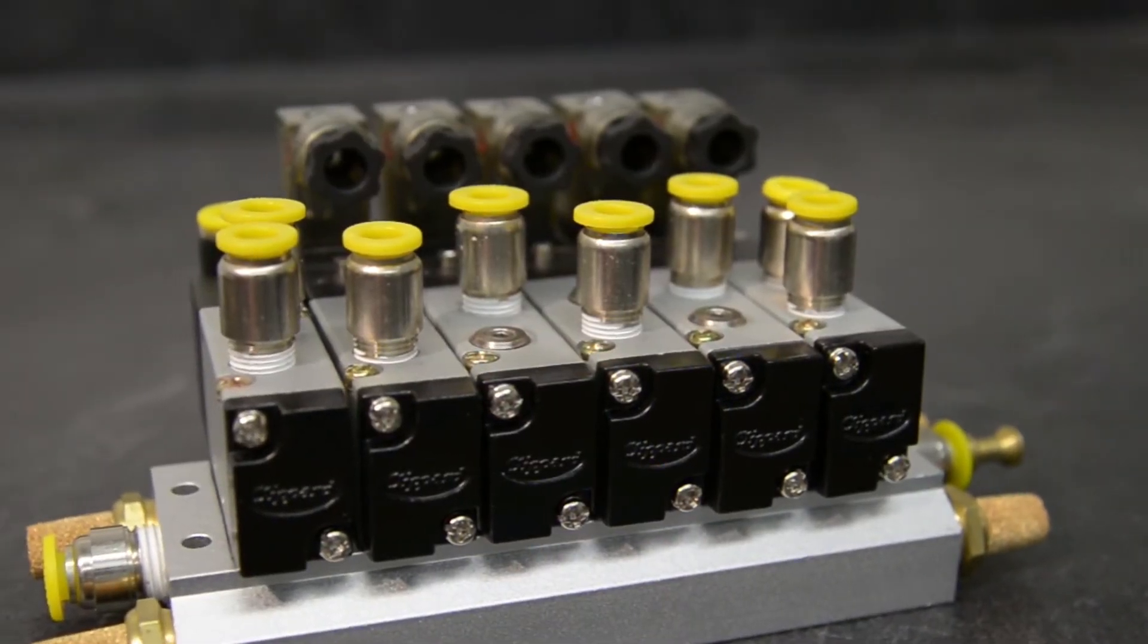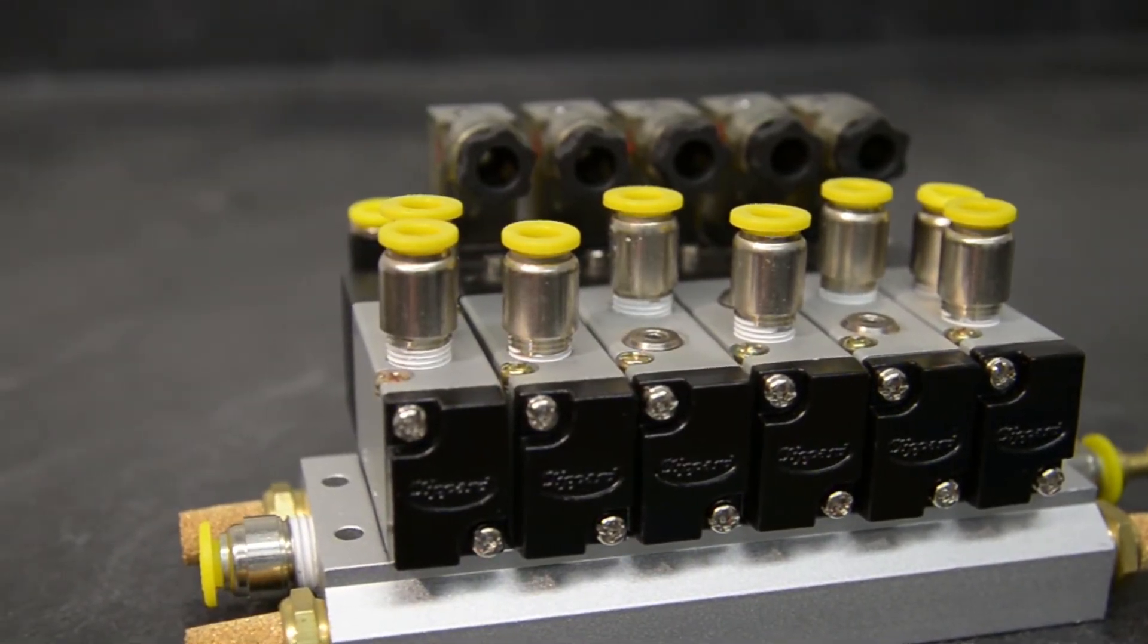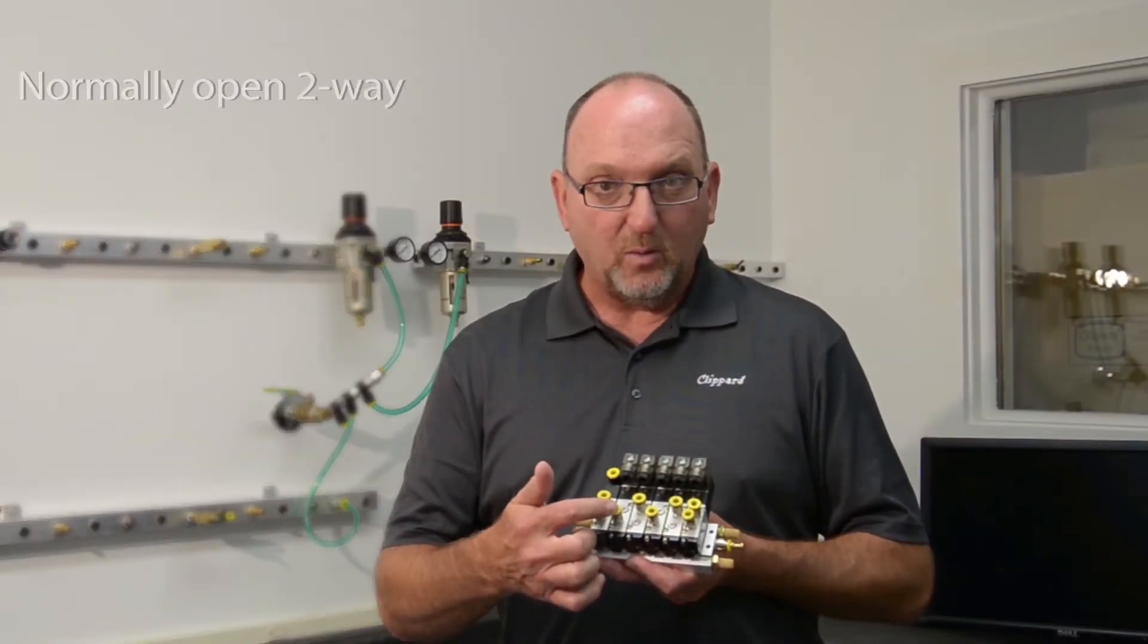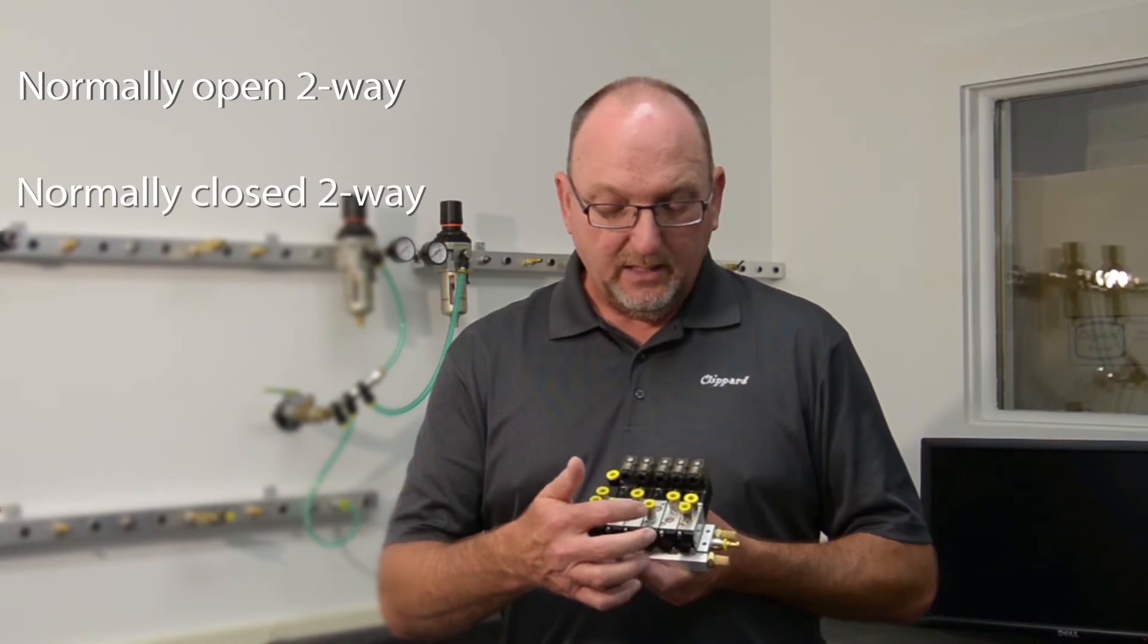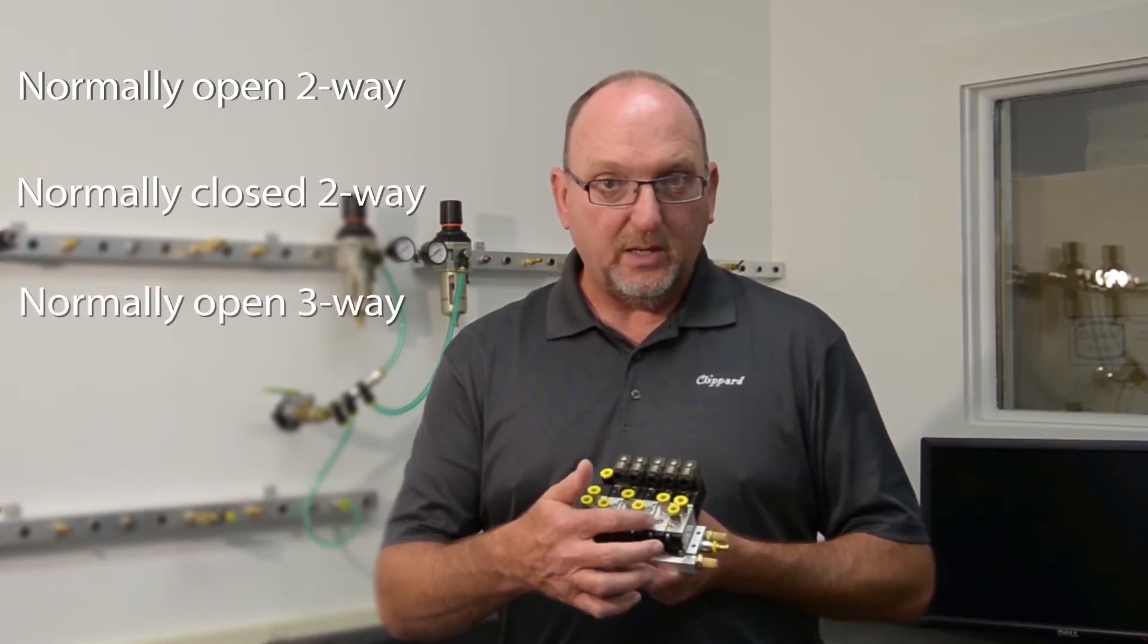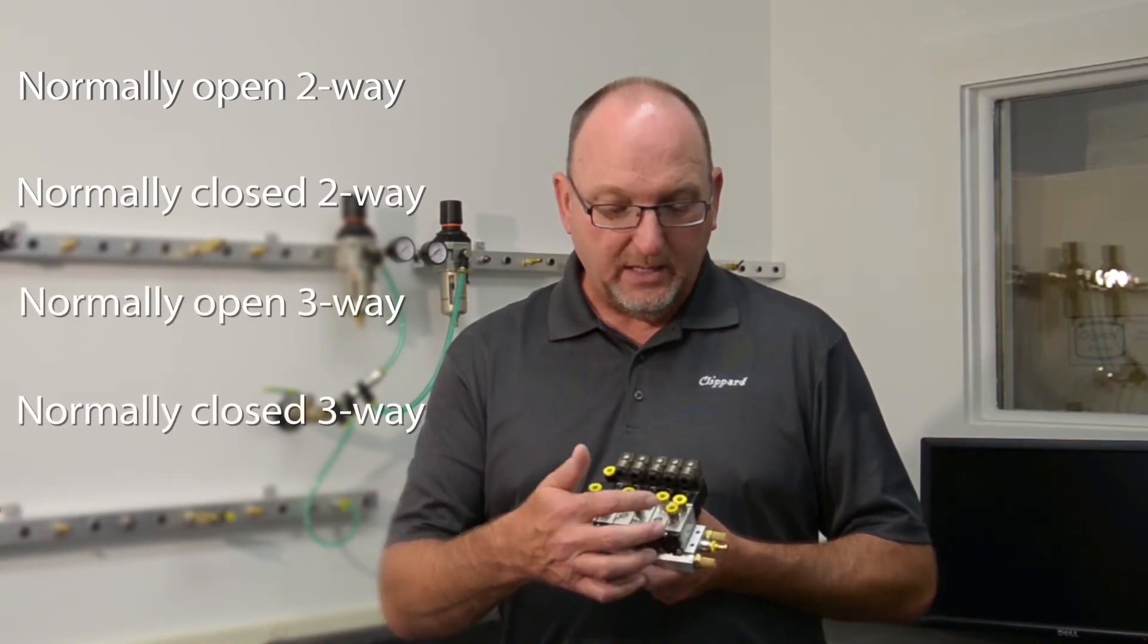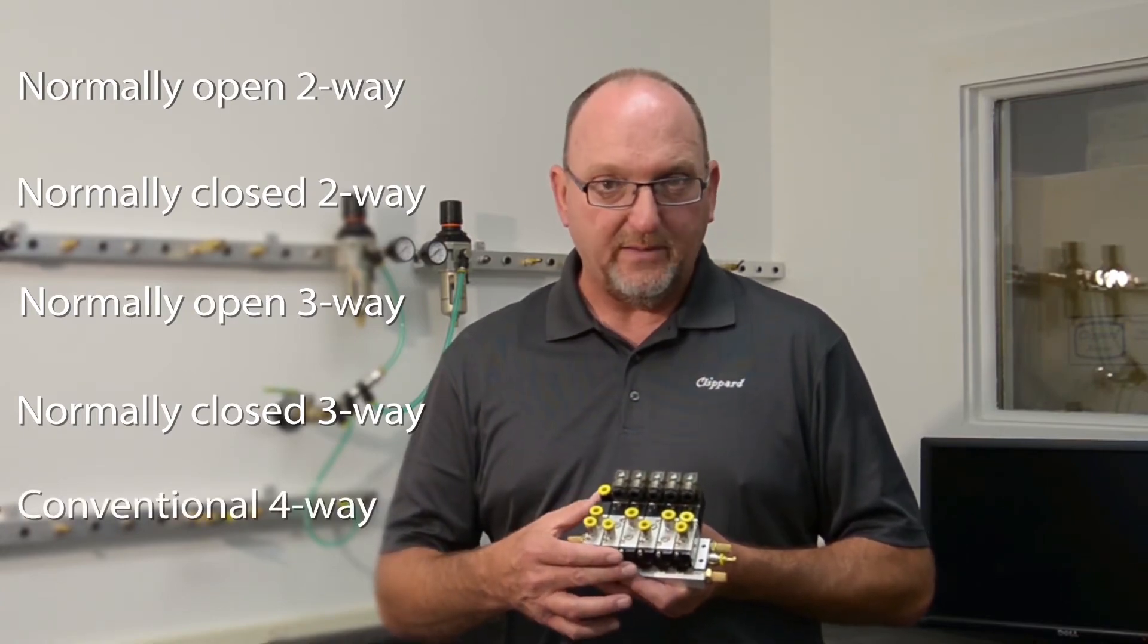So what we have here is a set of four-way valves. The very first valve will be a normally open two-way. The next one would be a normally closed two-way. The third one is a normally open three-way. The fourth one's a normally closed three-way. And the last one is your conventional four-way valve.